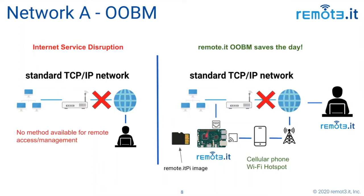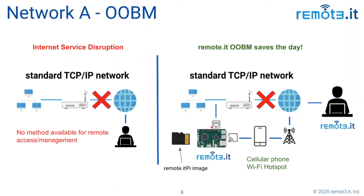We're using a Raspberry Pi and we've done a downloadable SD card image from our website. If you download that and burn it on the SD card and boot up a Pi in this configuration, it'll just work. The Pi will join this LAN with a wired Ethernet IP address, and it will also go off and look with its Wi-Fi interface for the cellular phone hotspot.